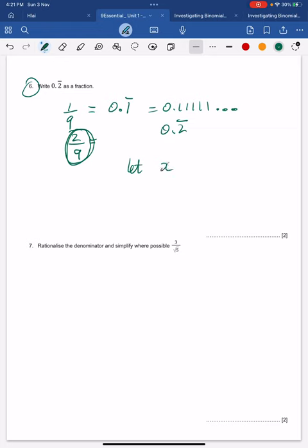You do a little bit of algebra: x equals 0.2 recurring, and you write out the recurring part a little bit.